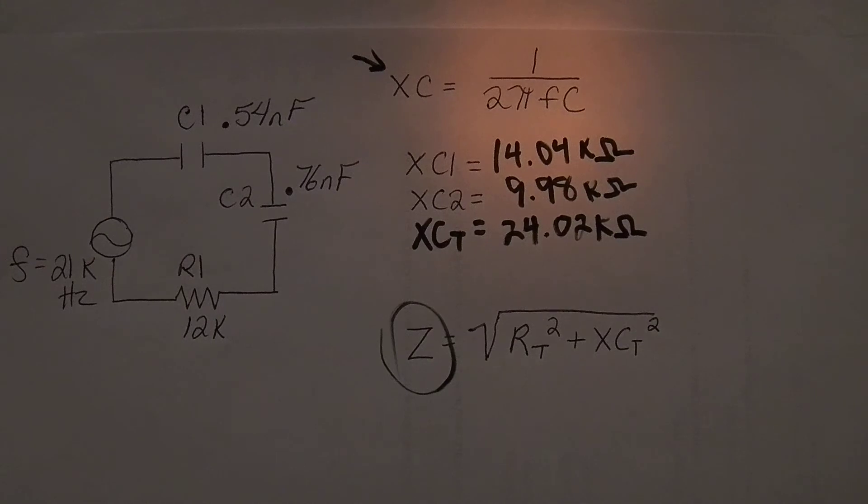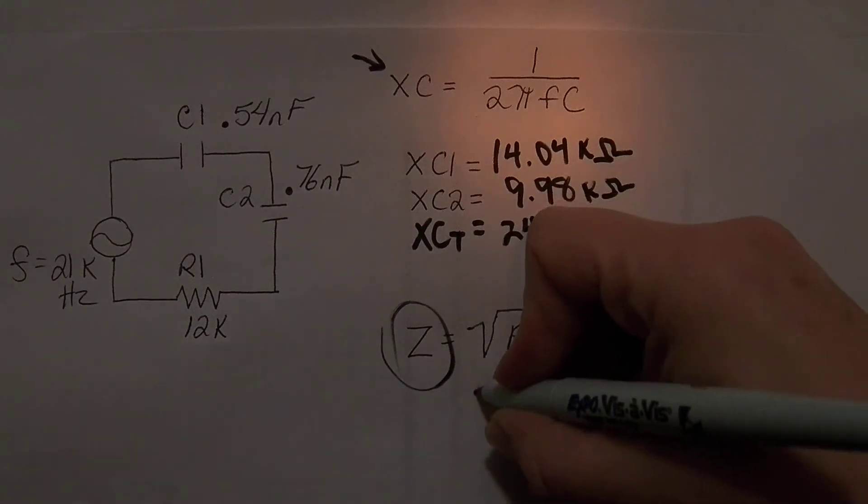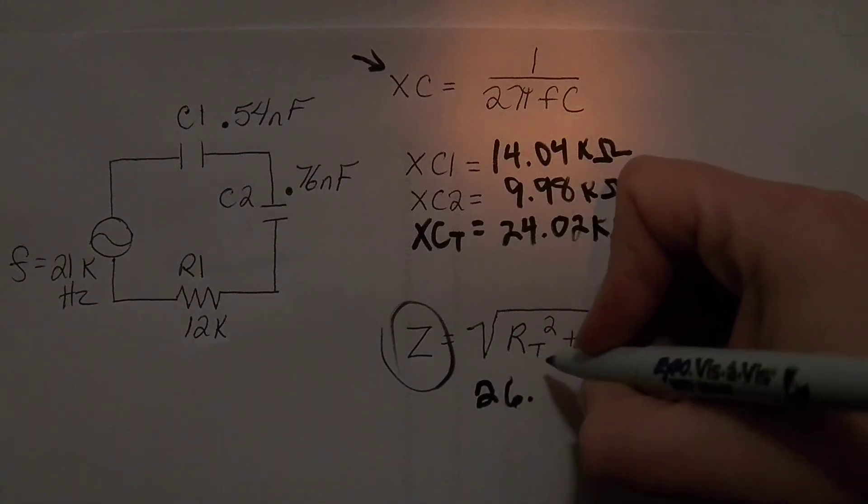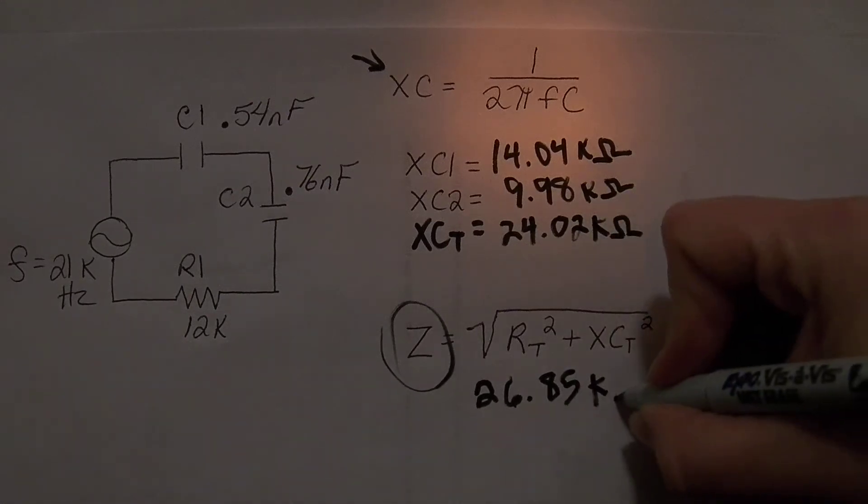And then I'm going to hit my equal sign, because that's my order of operation. I do the pieces in the middle first, and then I'm going to square root that all and hit my equal sign again, and I get a total impedance of 26.85 kilo ohms.